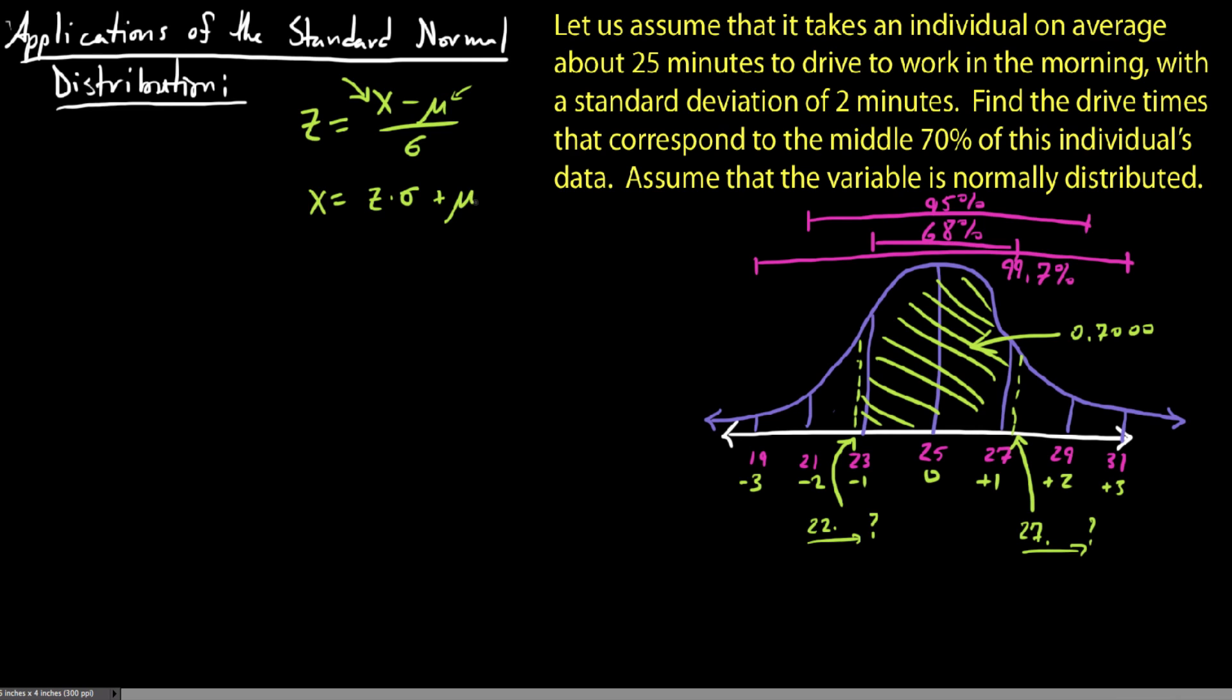I think we're going to get a score here that would indicate that we have one-point-something-something on our z-score, but what we want are the drive times. So what we're going to be taking is we're going to take our z-scores, and we're going to convert them back into original data values, or x-values, using this formula.